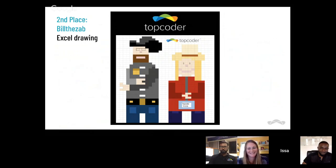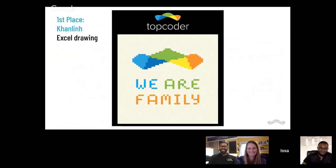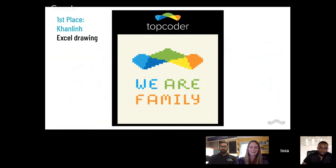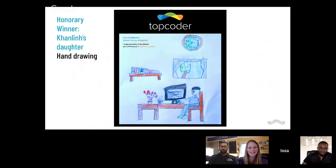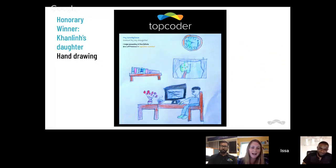Second place is Bill the Zab — this is an Excel drawing of me, Adrock, and cowboy hats, reminiscent of TCO 18 in Dallas where Adam wore his hat the whole time. First place went to Conlin — this Excel drawing is really cool how he created our logo in Excel. And not to steal his thunder — the next one is his daughter's hand drawing. We don't really have kids' challenges at Top Coder, but he submitted this design and it's just adorable — she drew her father's workplace. She's our honorary winner and we're sending a t-shirt her way.